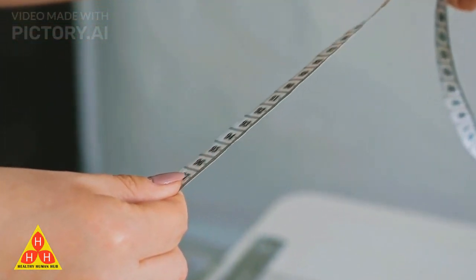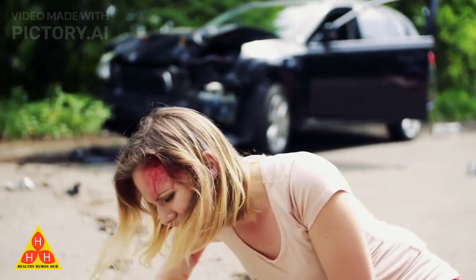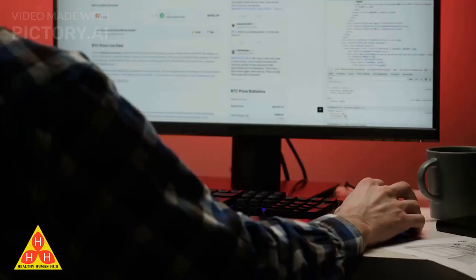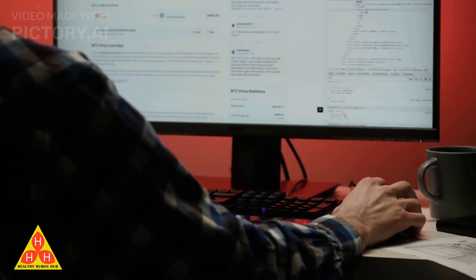To use a pregnancy calculator you will need to know the first day of your last menstrual period. This is the first day of bleeding, not spotting. Once you have this information you can enter it into the calculator.